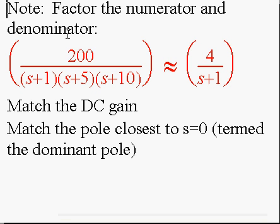Note that what we wound up with is the first order model is roughly 4 over S plus 1. What I essentially did — if I take that cubic and factor it — it has poles at minus 1, minus 5, and minus 10. What I did is match the pole closest to the origin as the dominant pole, and it also matches the DC gain. That's essentially what you do to find a first order approximation.